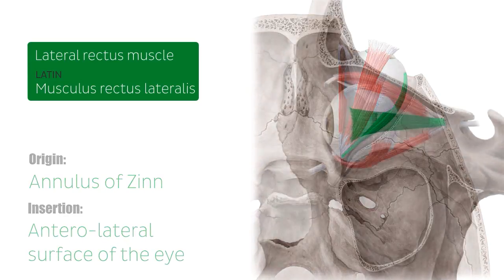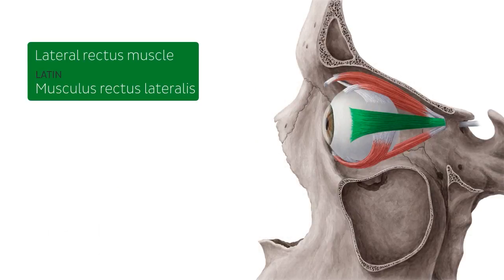The lateral rectus muscle has one function and that is to move the eye, from a neutral position, away from the nose in a lateral outward direction. This movement is called abduction.